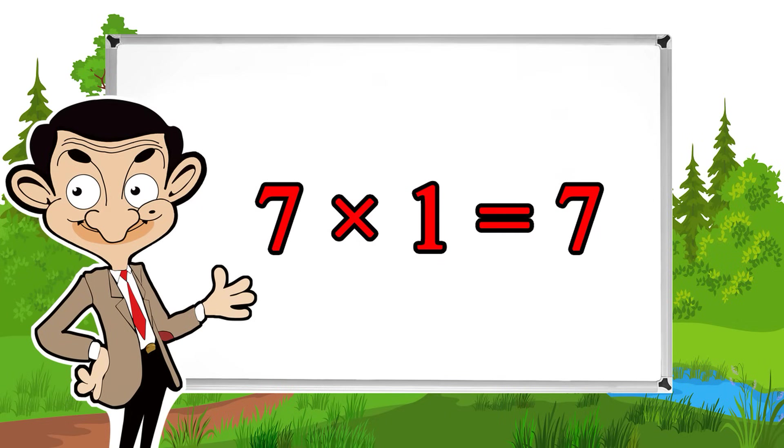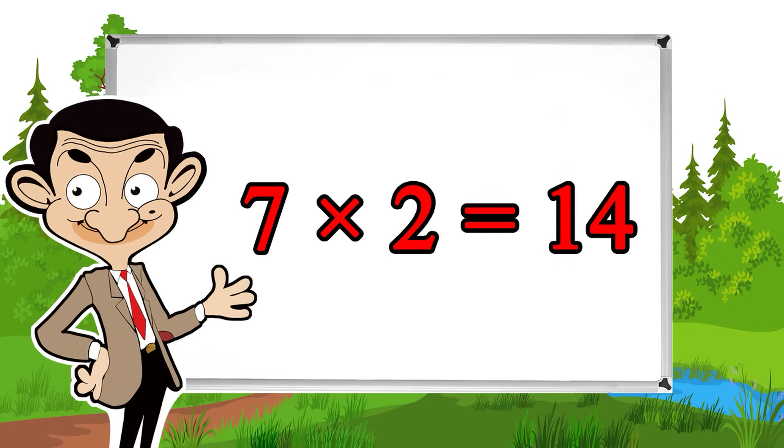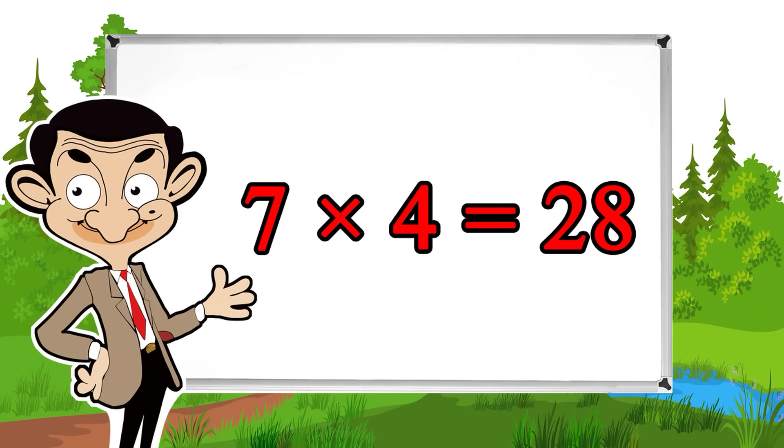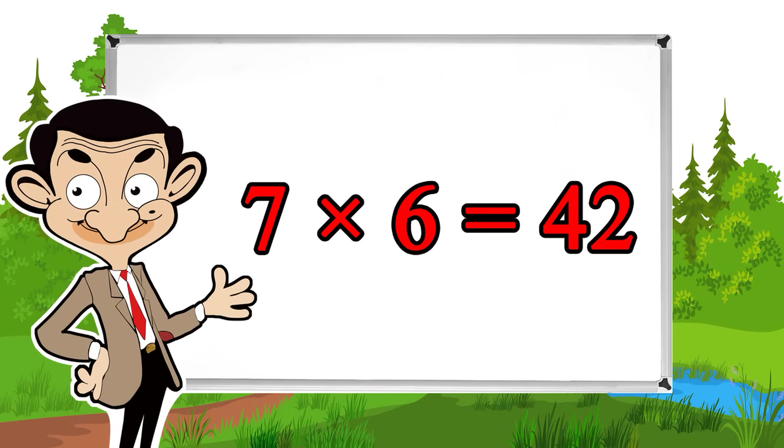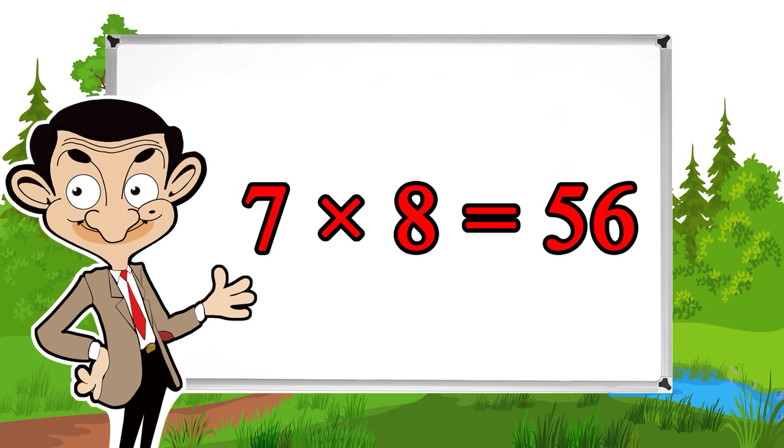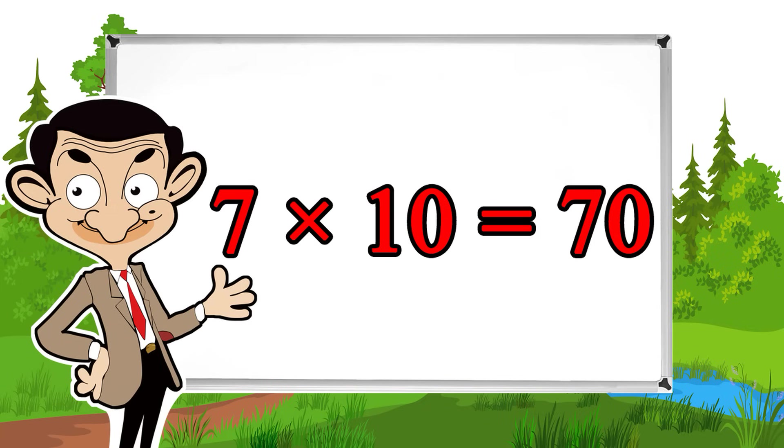7 times 1 equals 7, 7 times 2 equals 14, 7 times 3 equals 21, 7 times 4 equals 28, 7 times 5 equals 35, 7 times 6 equals 42, 7 times 7 equals 49, 7 times 8 equals 56, 7 times 9 equals 63, 7 times 10 equals 70.